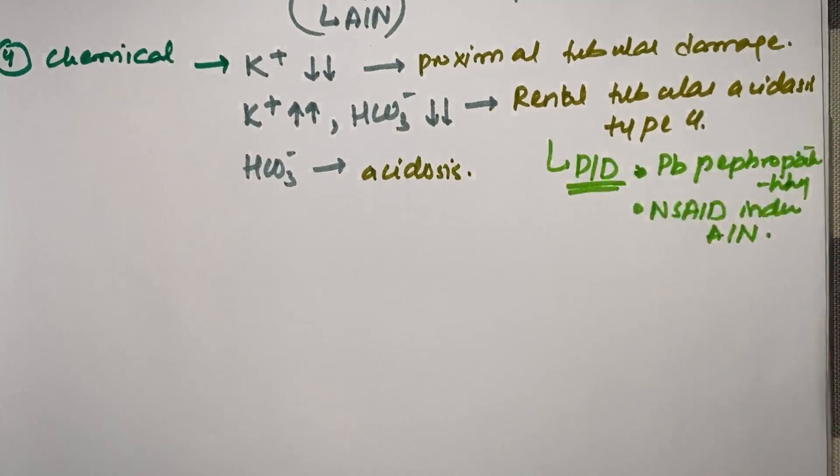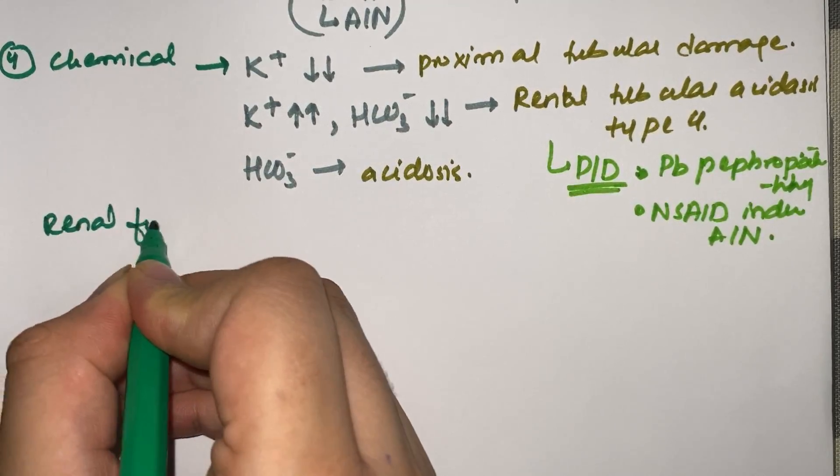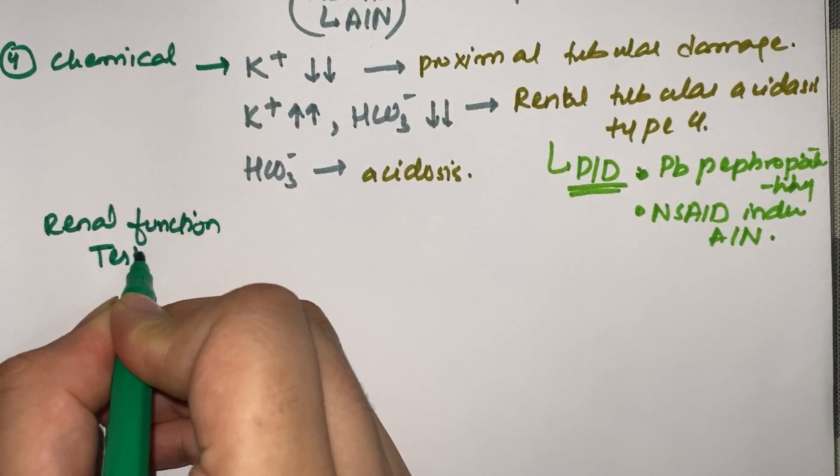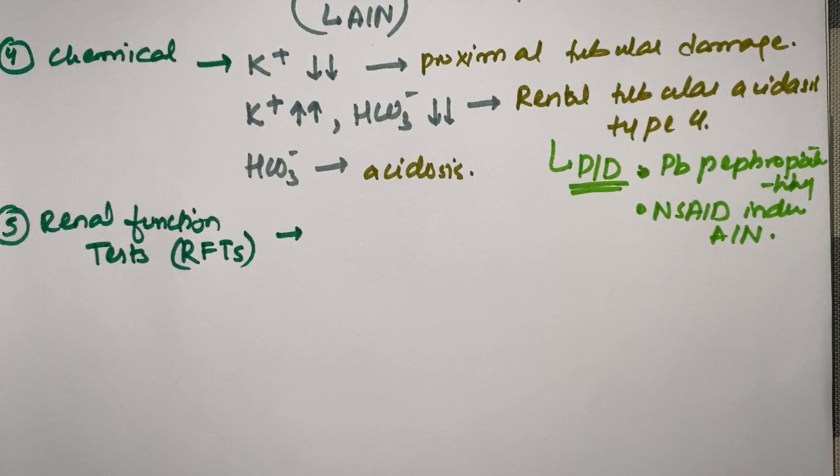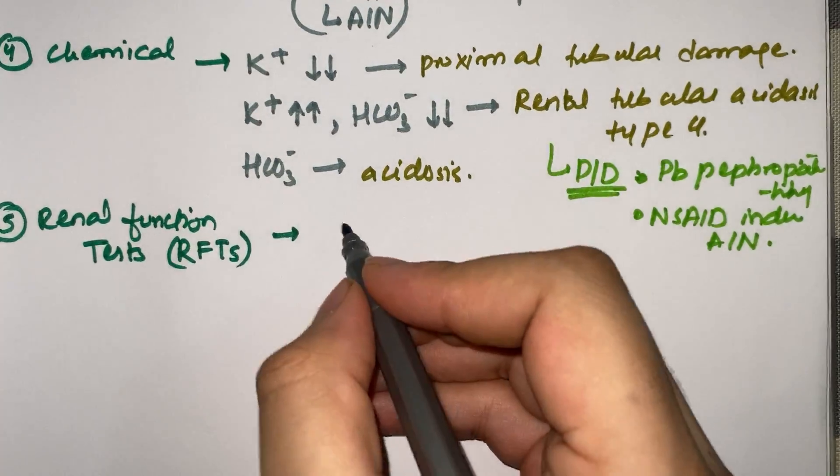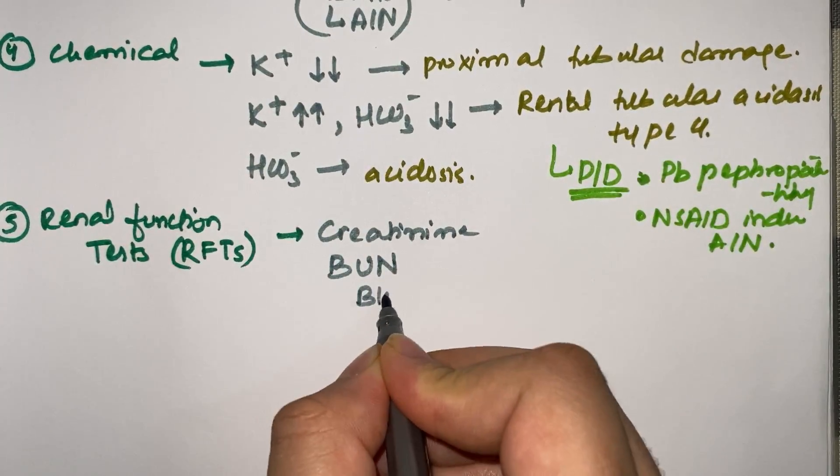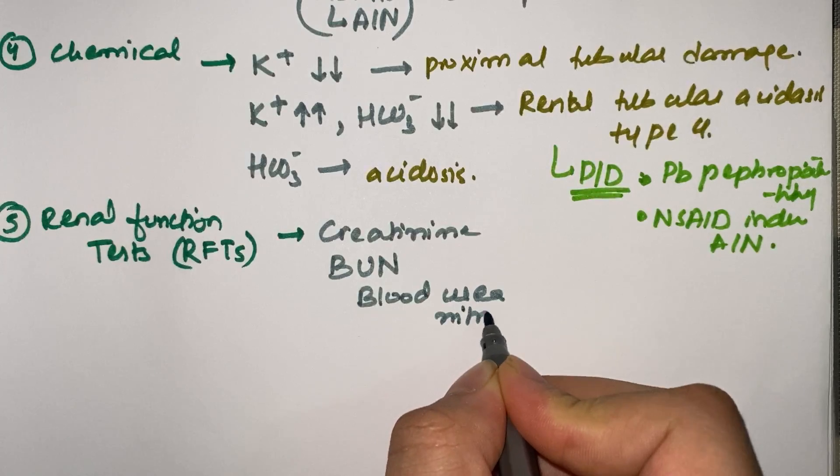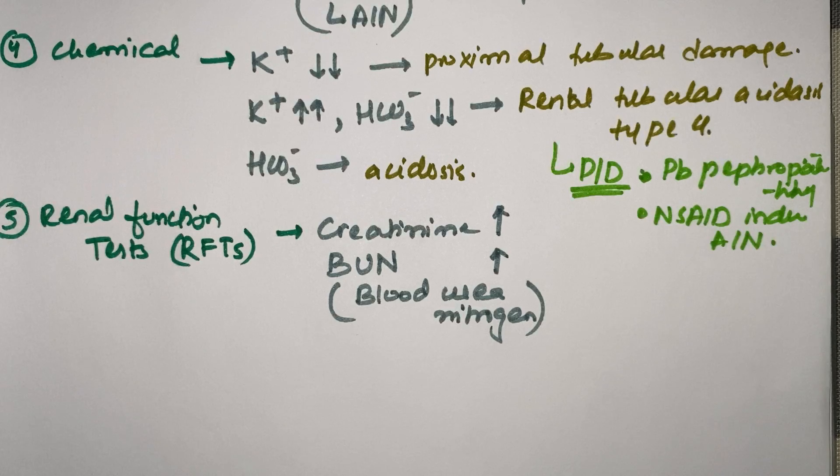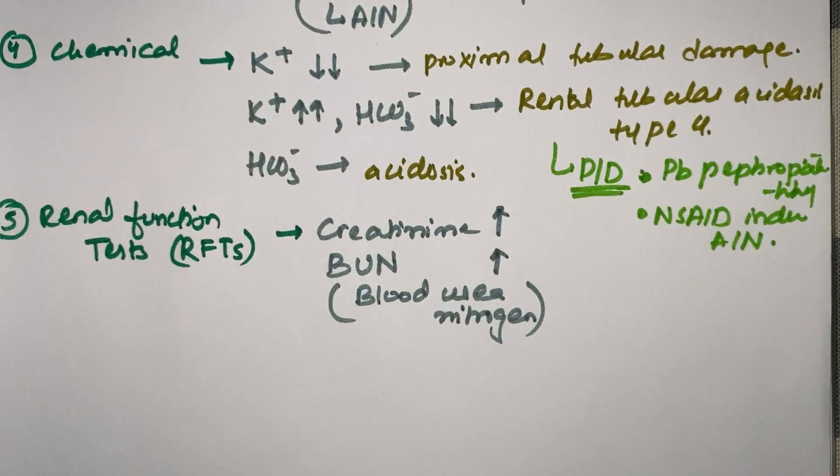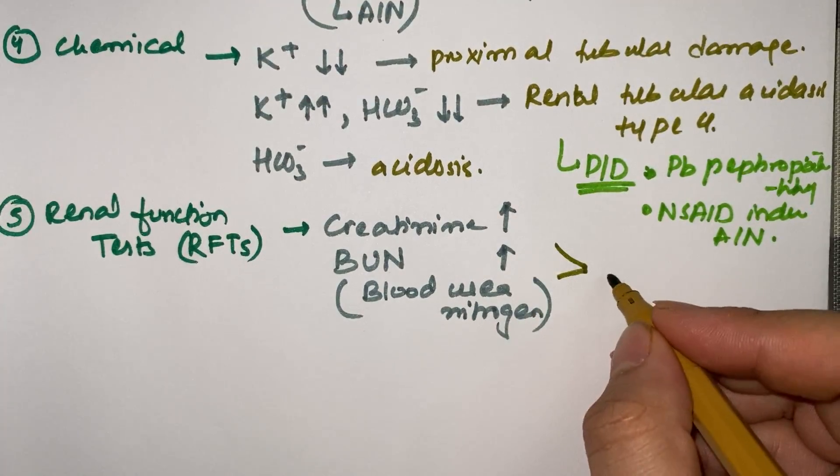Moving on to renal function tests—or as you commonly hear, RFTs. What do RFTs show? There are two measures: creatinine levels and BUN (blood urea nitrogen). When these two levels are elevated, it means wastes are not being removed from the body—the kidney is not performing its function properly. This shows reduced renal function.